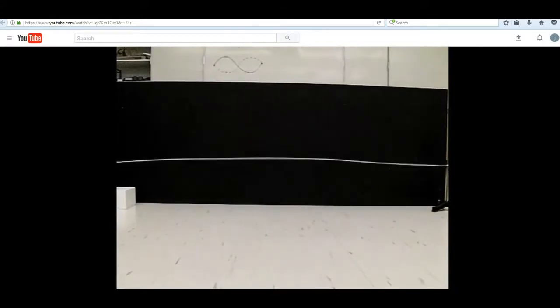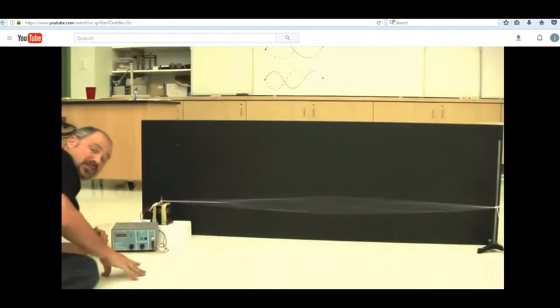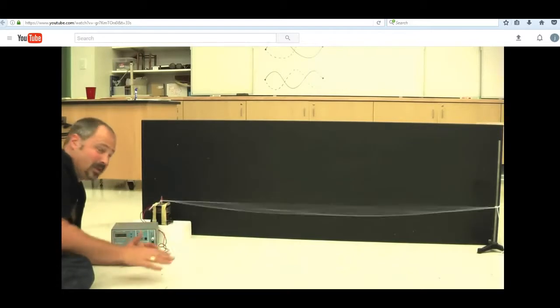And when we slow it down to slow-mo, you can actually see that up and down vibration of the string. The crests and troughs don't move across. That's why we call it a standing or stationary wave.